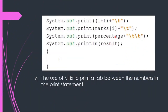We have also used '\t' in the print statements. The use of \t is to print a tab between the numbers. Tab represents a specified space that is greater than a regular space bar space. Whenever we use the space bar it is a small space, but if we want a larger space we use the tab key. So to print a tab between numbers in the print statement, we have used \t.